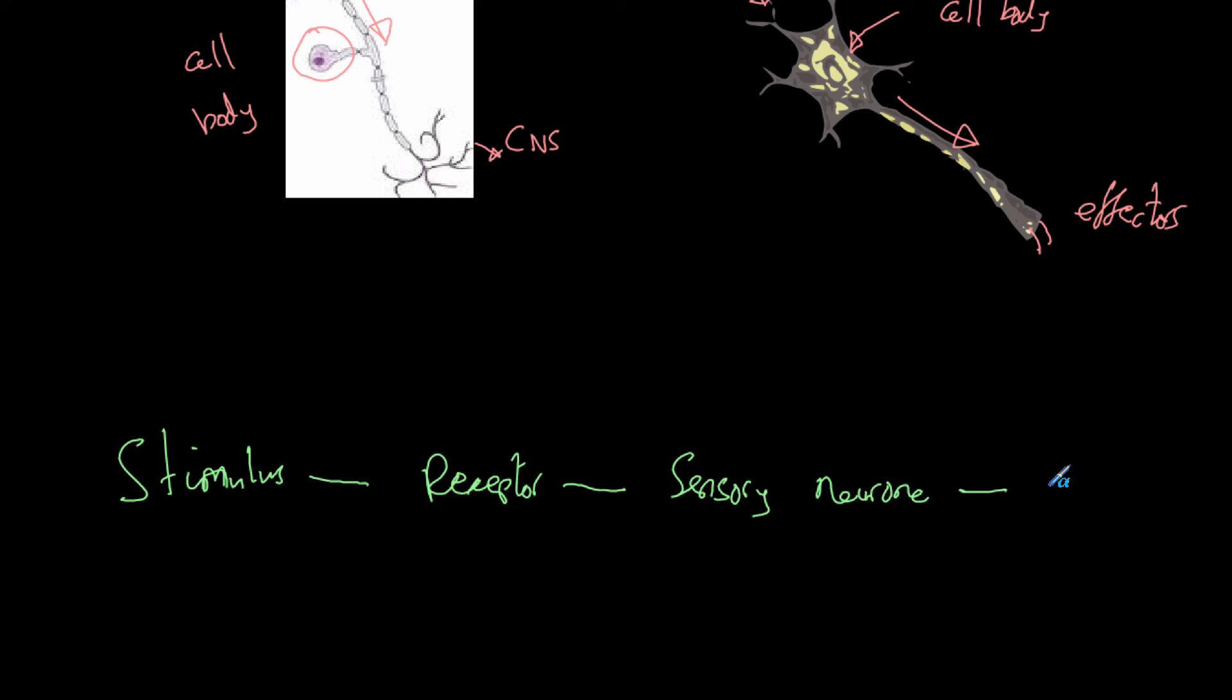The sensory neuron will then take that signal to the central nervous system. The central nervous system will then process the signal, decide what response to carry out, and then send a signal to a motor neuron.